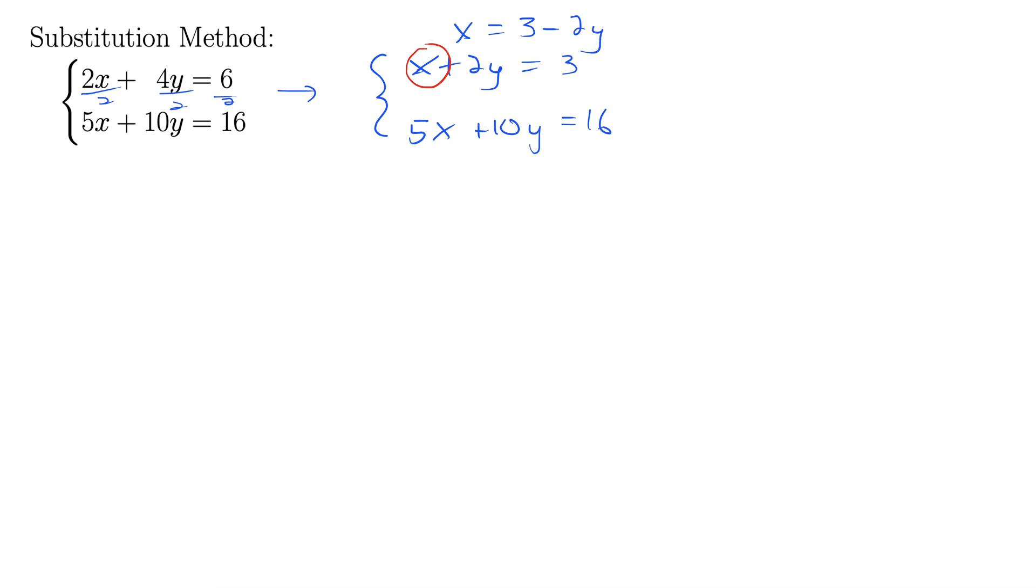And this gets plugged in right down here. And I'm going to be careful to put parentheses around it. That gives us 5 times (3 minus 2y), because I substituted in for this x, plus 10y equals 16. And now we have an equation we can solve just for y. So let's do that.